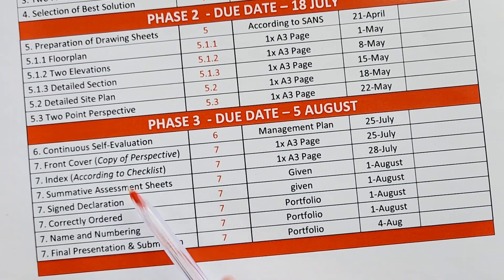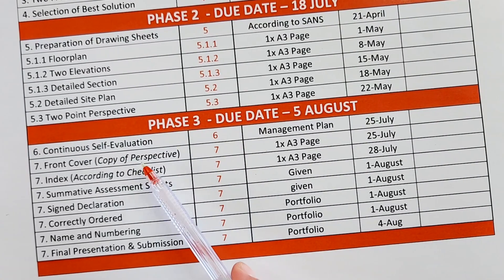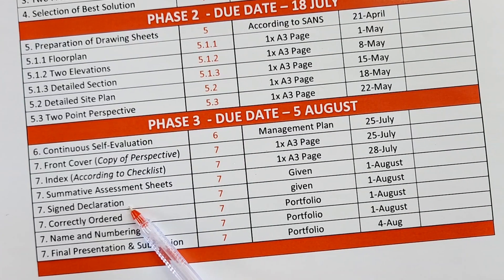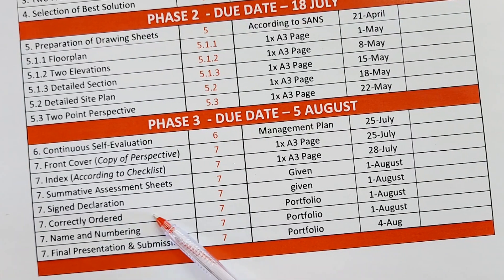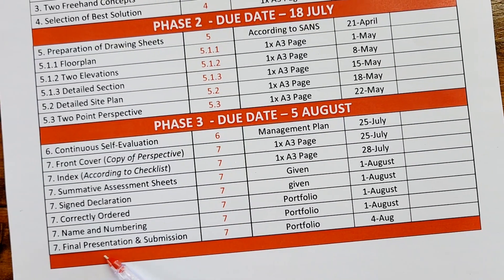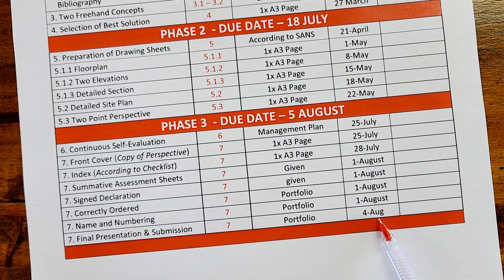Right at the end there is a continuous self-evaluation that needs to be completed by you. The front cover, index, and summative assessment sheets must be completed. You have to sign the declaration, your entire document needs to be in the correct order with your name and numbering on every page, and your final presentation and submission must be by the 4th of August.